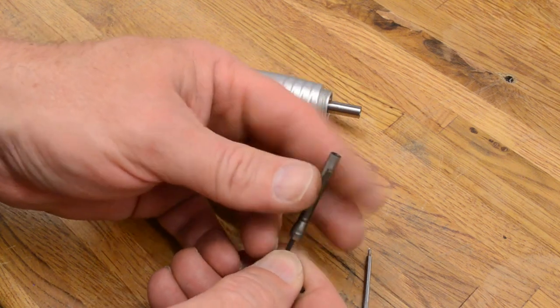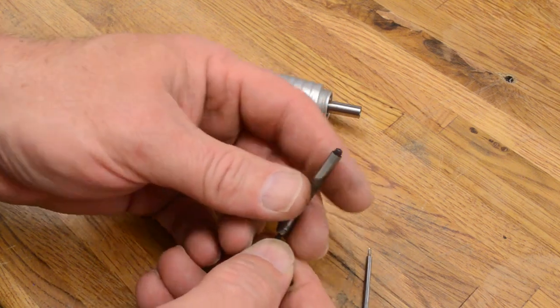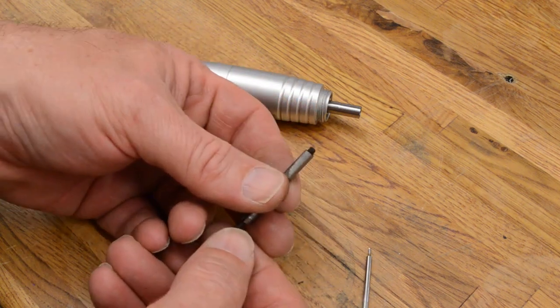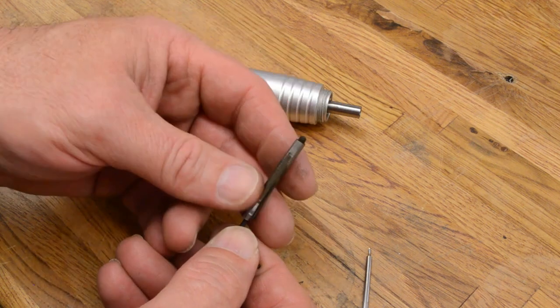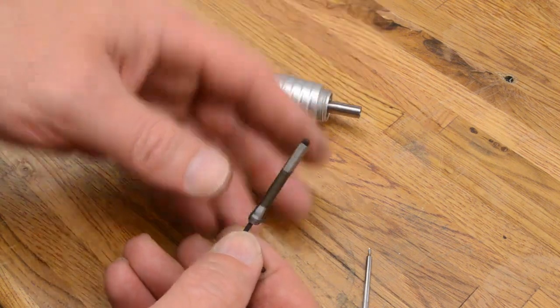I'm going to pull this, or run the set screw out, just so that you can see it. All right, see that set screw. Okay, this is what locks the collet into the shaft.